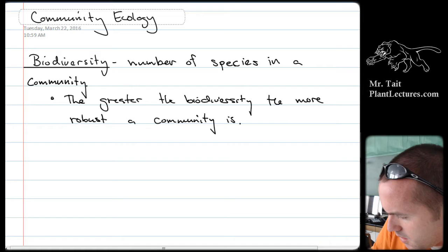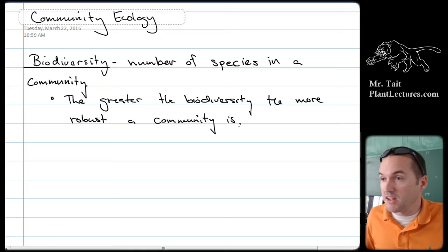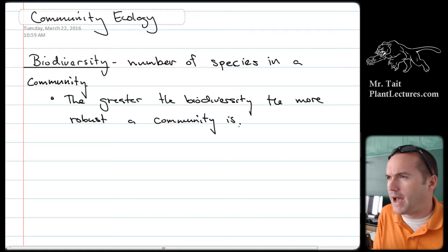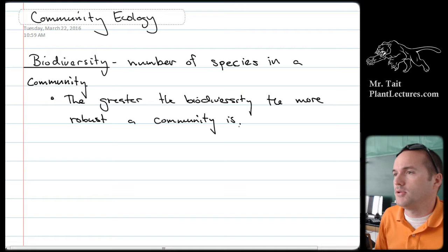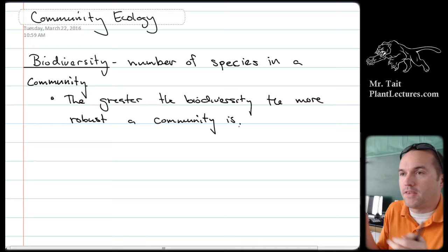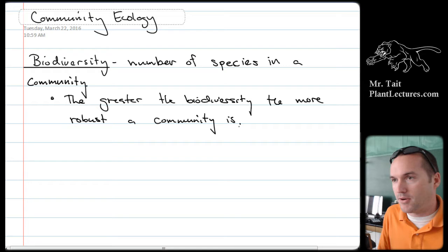Let's say there's a community and it's got some really good grass — it grows really fast and has a lot of nutritional value. That's really the only primary producer, so there's all kinds of things that eat the grass, and things that eat those things. Then a parasite comes in and attacks the grass, the grass slowly dies off, everything that would eat the grass dies, and everything up the chain dies too — the entire community collapses.